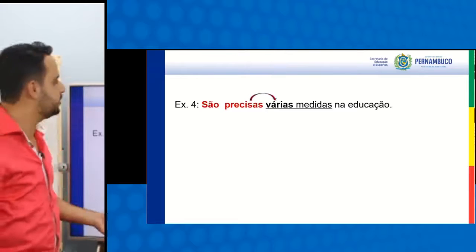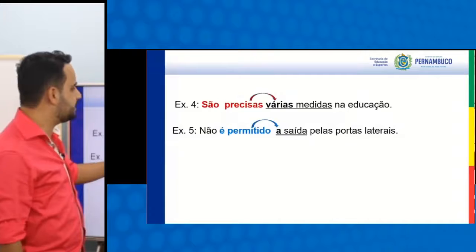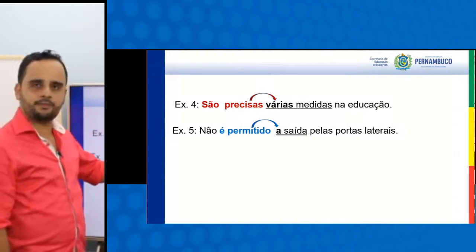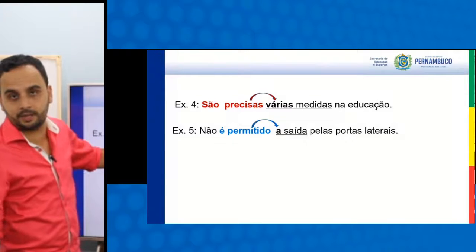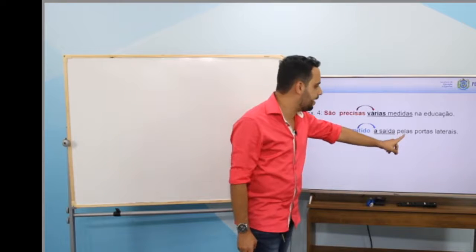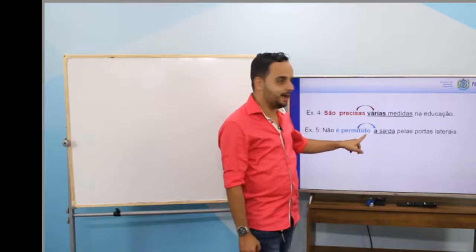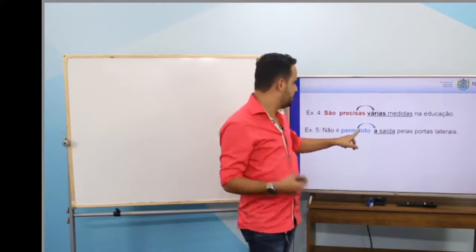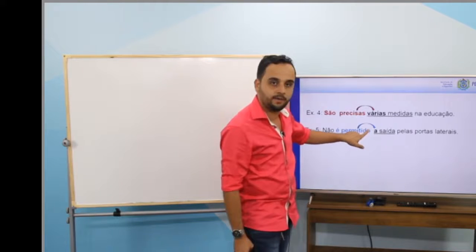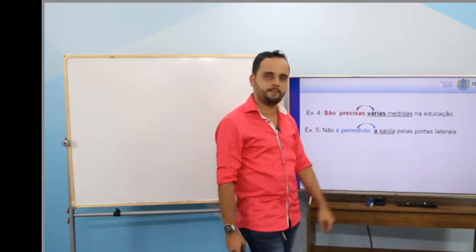Olha os outros exemplos. São precisas várias medidas na educação. Perceba a palavrinha 'várias' — não é um artigo, mas é um determinante, é um adjetivo. Não é permitida a saída pelas portas laterais. Foi erro de digitação meu — o correto é 'não é permitida a saída'. Tem o 'a saída', então a saída não é permitida. Às vezes acontece: você tá digitando, aí o Word vai lá e corrige.